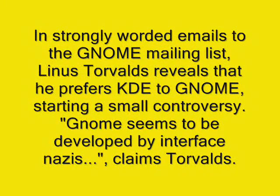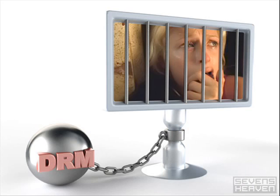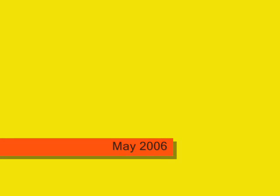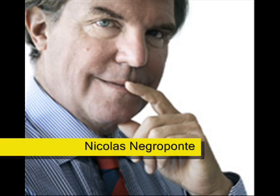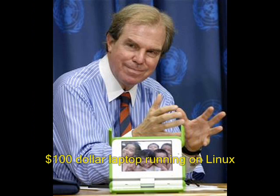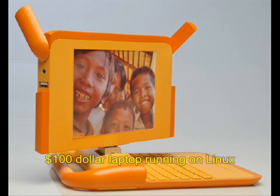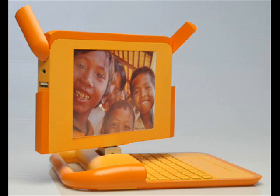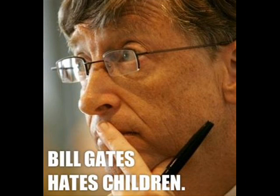December 2005: in strongly worded emails to the GNOME mailing list, Linus Torvalds reveals that he prefers KDE to GNOME, starting a small controversy. "GNOME seems to be developed by interface Nazis," claims Torvalds. May 2006: Nicholas Negroponte displays the first working prototype of a $100 laptop computer running Linux and designed for children in the third world. Bill Gates ridicules the project.